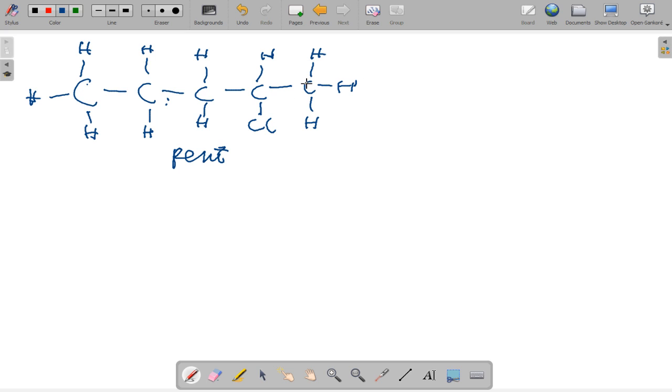We have a chlorine atom on carbon two, so we count from the right. So it will be 2-chloro, and is it an alkane? Yes, because it's a halogenoalkane, so it's 2-chloropentane. That's how to name that particular one.